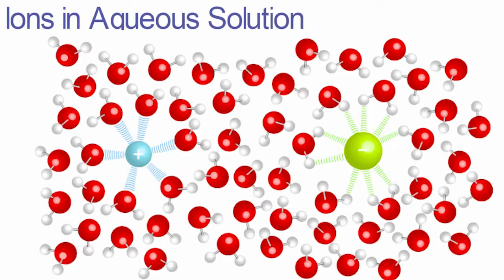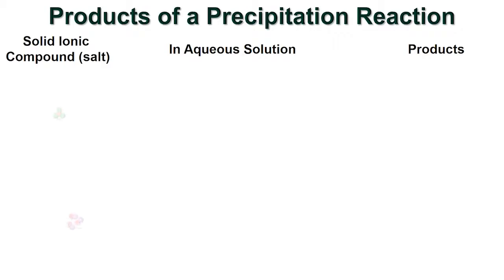Soluble ionic compounds will become free ions surrounded by water molecules. The positive ion will be attracted to the delta-negative oxygen in the water molecule, and the negative ion will be attracted to the delta-positive hydrogen in the water molecule.